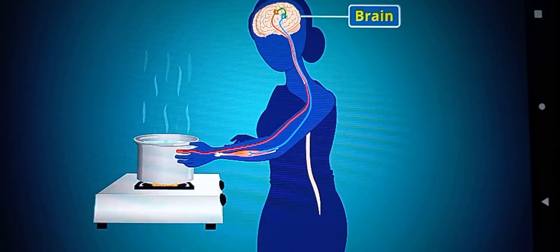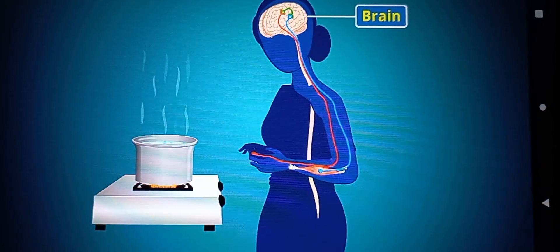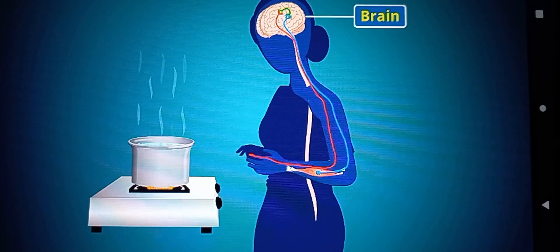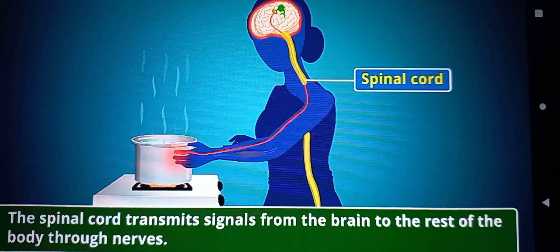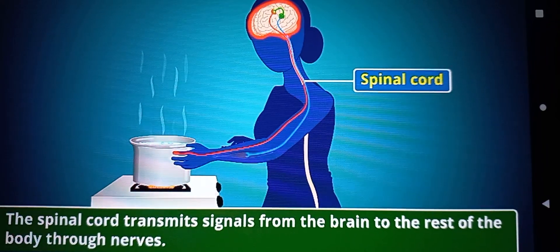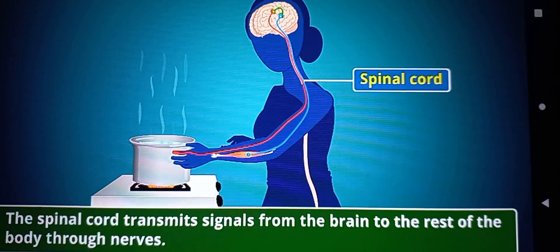This decision is sent to the muscles in the hand in the form of electrical impulses. So, the second function of the spinal cord is to transmit signals from the brain to the rest of the body through nerves.